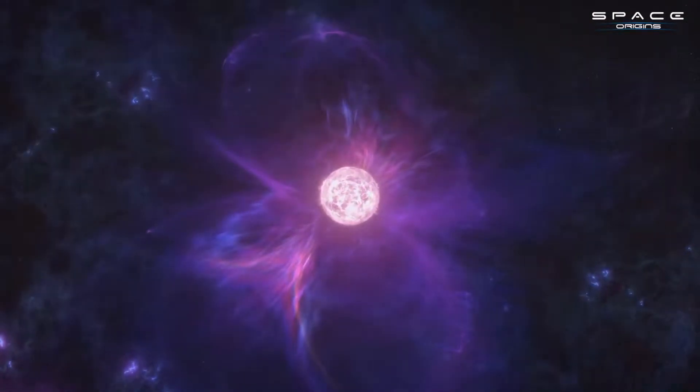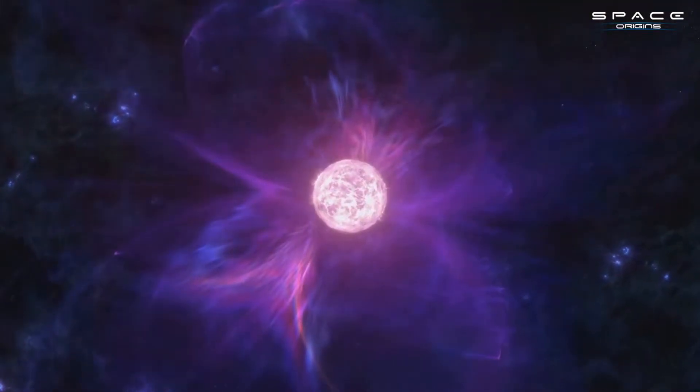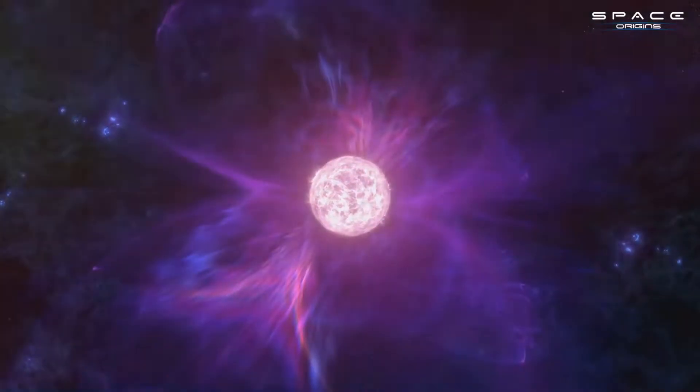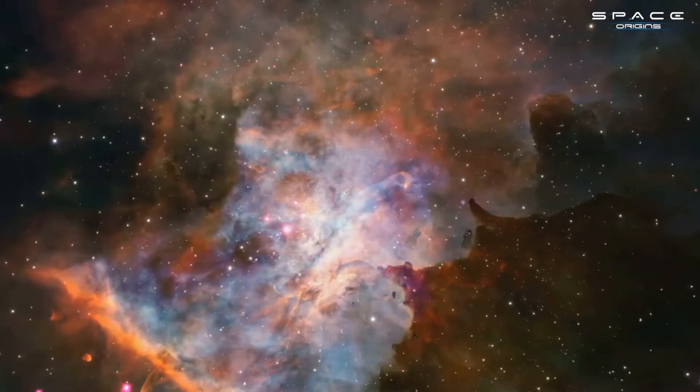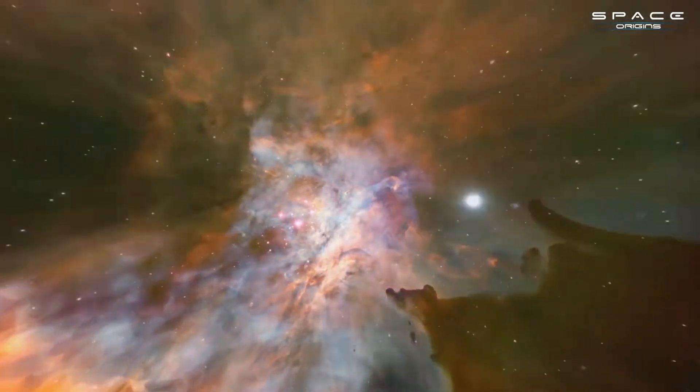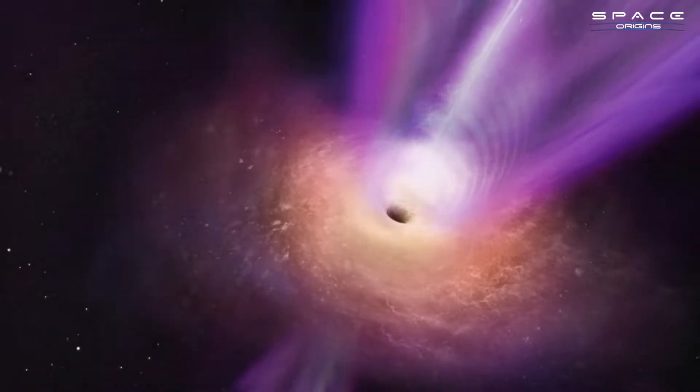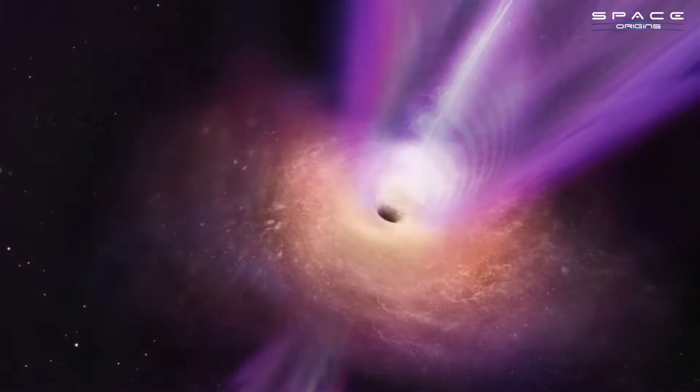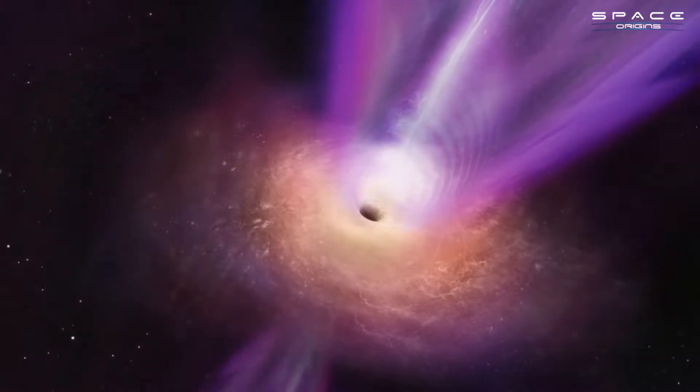But where does this particle come from? What is its origin? These are questions that have scientists scratching their heads. The Amaterasu particle is like a cosmic jigsaw puzzle with missing pieces. Its origins remain unknown, a mystery that continues to fuel the curiosity of scientists. Is it a product of gamma-ray bursts? Or is it propelled by jets from a supermassive black hole? These are possibilities that are being explored as scientists venture beyond the standard model of particle physics.